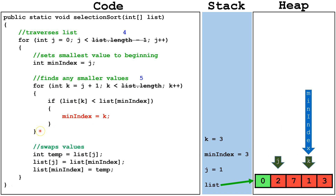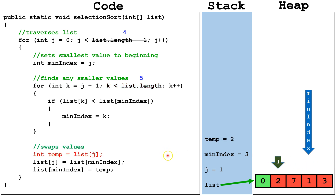Then we get to the end of the internal for loop and increment k by 1. We check is k still less than 5 — it is, so we continue. We check is list index k less than list min index. It is not, so we skip this line of code. Next we increment k by 1. We notice that k is now pointing out of bounds. We check is k still less than 5 — it is not, so we terminate the internal loop. Then we'll swap the values in index j with index min index: we set temp equal to list index j, then set list index j equal to list min index, then set list min index equal to temp. Now that we've reached the end of the external for loop again, we can mark index 1 as sorted.